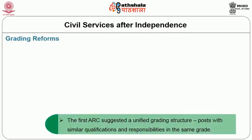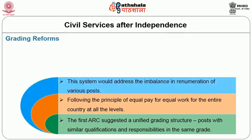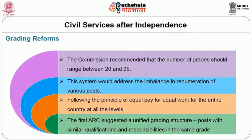The First ARC suggested a unified grading system wherein posts with similar qualifications and responsibilities are placed in the same grade. It also called for the principle of equal pay for equal work across the entire country at all levels, saying this would address the imbalance in remuneration of various posts. The commission also recommended that the number of grades should range between 20 and 25.